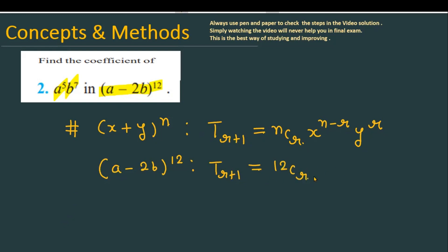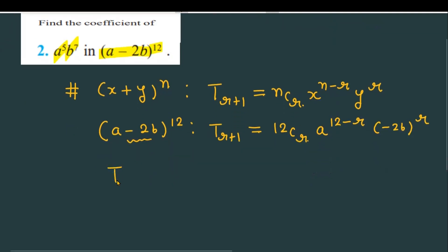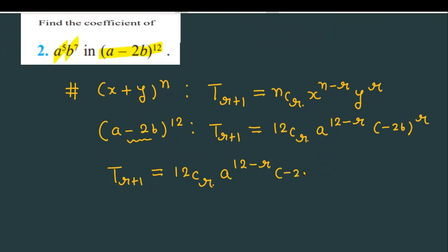With x replaced by a and y replaced by (-2b), the general term becomes: 12Cr multiplied by a raised to the power (12 minus r), multiplied by (-2) raised to the power r, and b raised to the power r.